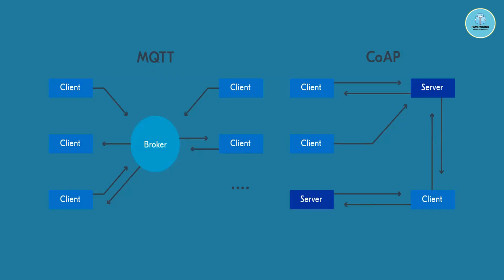MQTT is easy to implement and can efficiently transmit data between devices and the cloud, and vice versa. MQTT was originally developed in the early 1990s. MQTT messages are made up of a fixed header, variable header, and payload. These are some features we will talk about in more detail in a dedicated session.